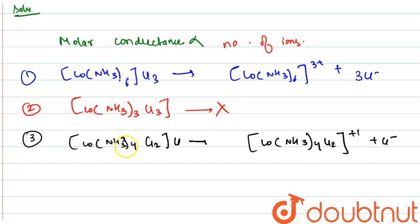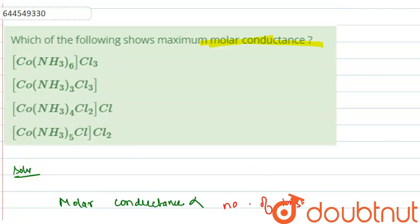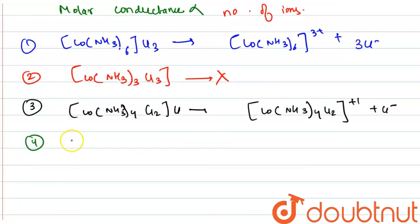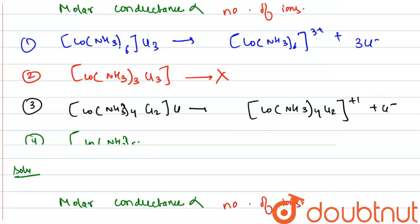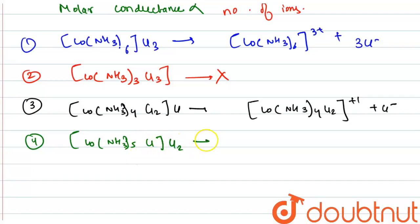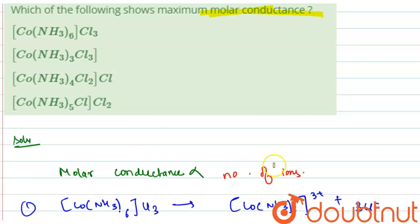The fourth option is [Co(NH3)5Cl]Cl2. It will dissociate into [Co(NH3)5Cl]2+ plus 2Cl-, giving three ions. So as we discussed earlier, molar conductance is directly proportional to the number of ions.